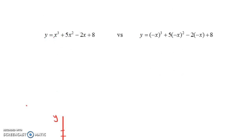Notice this one is a messy-looking formula — some type of cubic function. But if you take all of the x's — there are three of them — and replace each one with negative x, you could simplify the formula a bit. The point is, the graph of that function would be the same as the graph of the original function, only reflected across the y-axis.